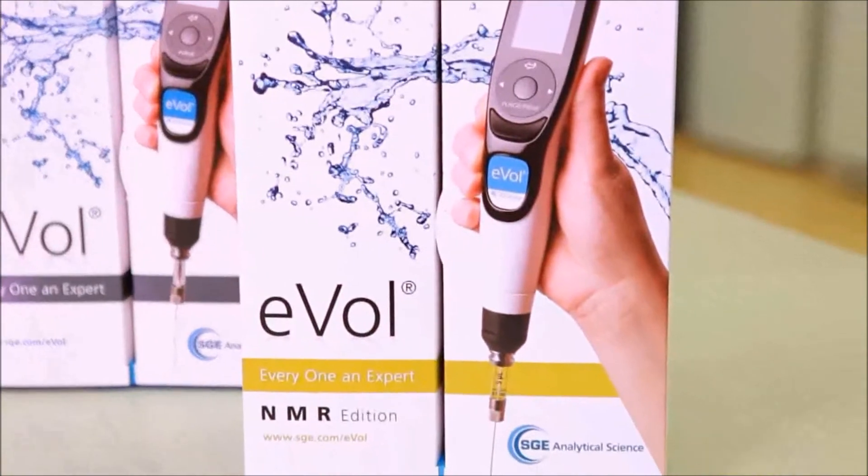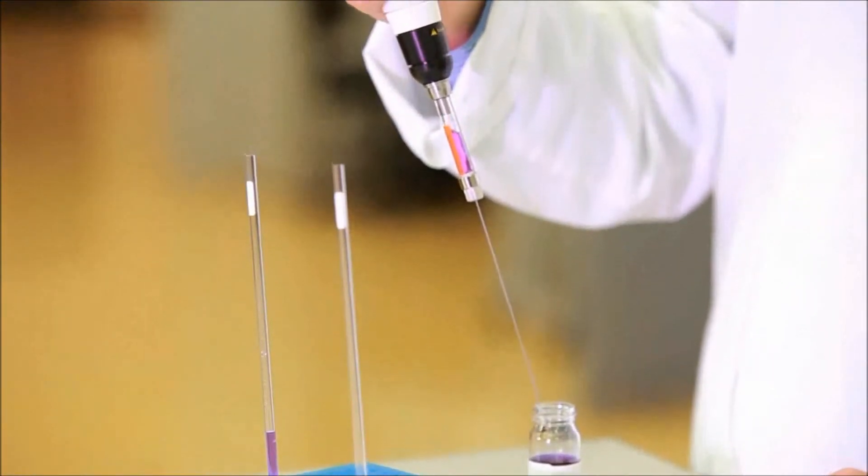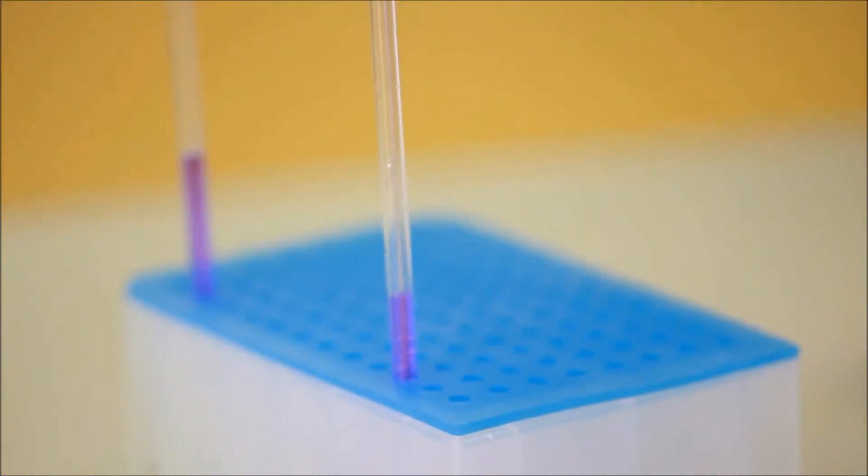Use the EVOL NMR Edition to further extend EVOL's capabilities. The NMR Edition kit features long stainless steel needles that enable in-tube sample dilution and mixing, and recovery of samples, facilitating reuse of NMR tubes.